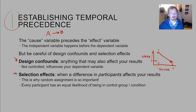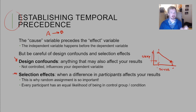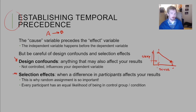The third requirement is about selection effects — making sure participants are randomly assigned to groups. If I have 10 participants, five should be randomly assigned to one group and five to the other, not the first five who sign up going to one group. Otherwise we're not sure if something else is controlling behavior besides the independent variable.